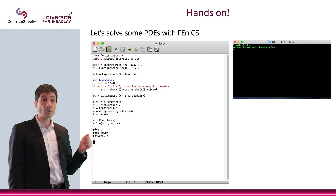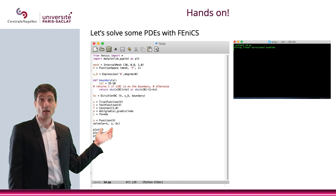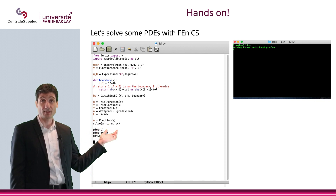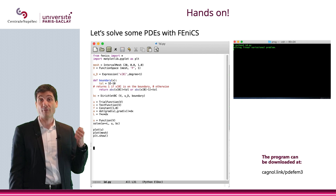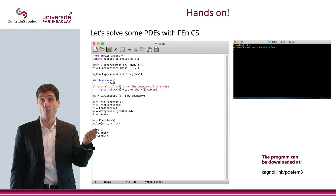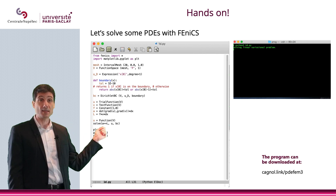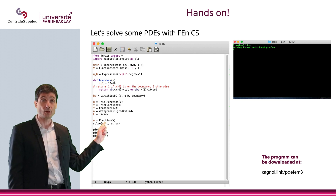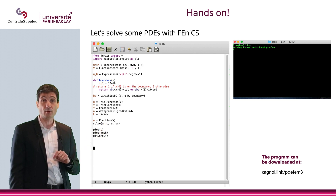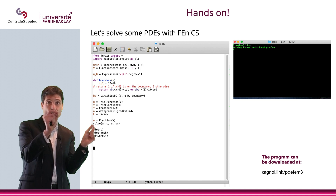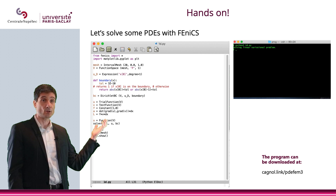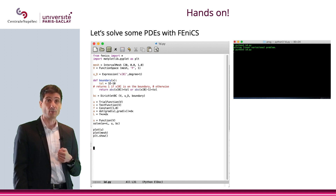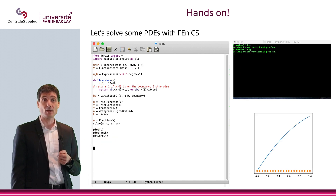Now, if I want to replace the homogeneous Dirichlet boundary condition by something like u(0) = 0 but u(1) = 1, then I could change the boundary condition — instead of putting 0, I put x, so at both ends it will be 0 and 1. That's just an easier way to do it. And then I can just run the problem again — and here is the new solution.